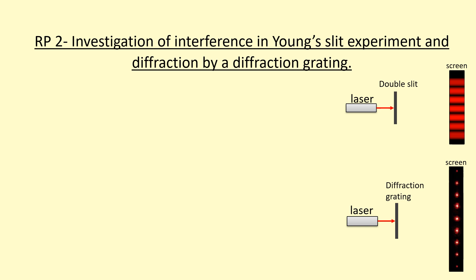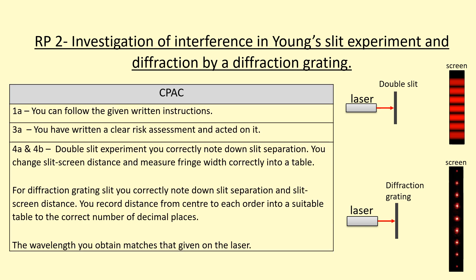In this video I'm going to talk about Required Practical 2, which involves using a Young's double slit and a diffraction grating to find the wavelength of a laser. In my class you'll be tested on the following CPACs: 1A (following written instructions), 3A (writing and following a risk assessment safely), and 4A and 4B (taking accurate measurements into a table and getting an accurate value for the wavelength once you analyse your data).